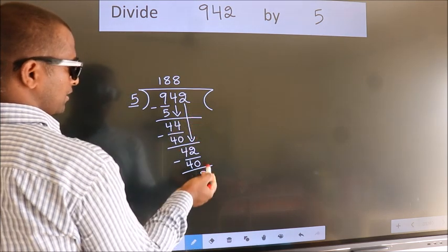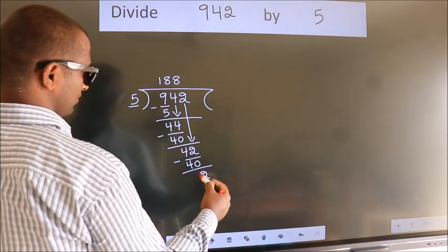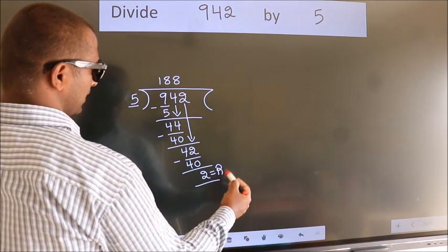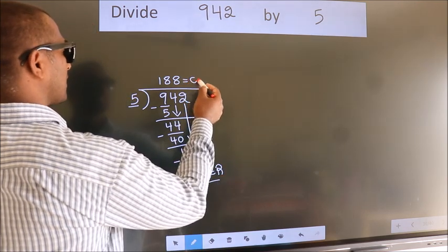No more numbers to bring it down. So we stop here. This is our remainder. This is our quotient.